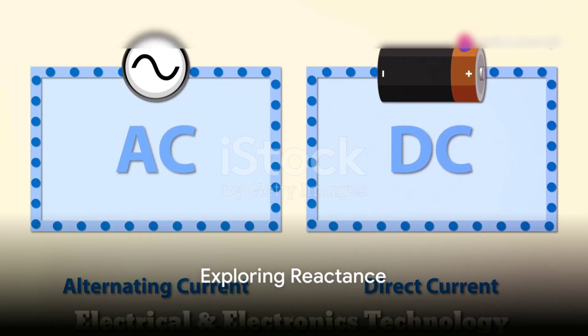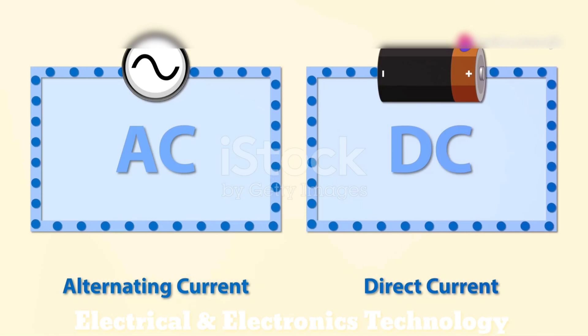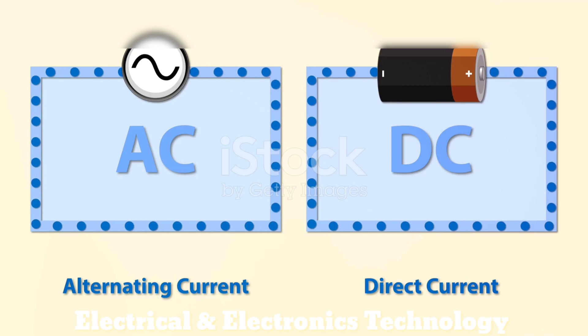Now, moving on to reactance. Reactance is a concept that specifically applies to alternating current circuits. It's a measure of how much a circuit resists the flow of current due to either capacitance or inductance.